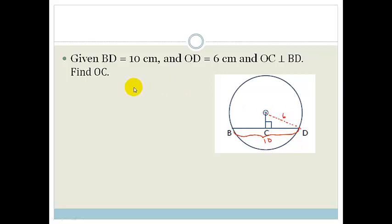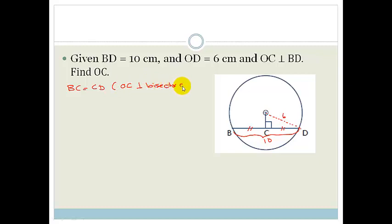From the theorems that we have learnt, we know that since O is the centre of the circle and OC is perpendicular to BD, we know that BC is equal to CD. Therefore we can say that BC equals CD because OC is a perpendicular bisector of BD. Therefore BC equals CD, which is half of 10, which is 5 cm. So now we know that each half is 5 cm.